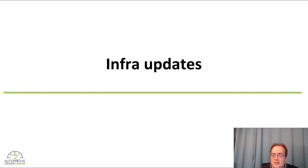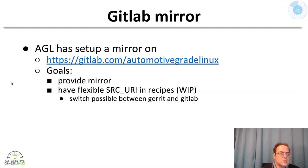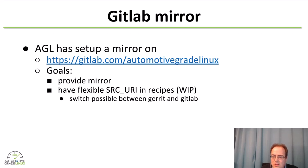On the infra update side, we now have a GitLab mirror available at gitlab.com/automotive-grade-linux. Currently we mirror all our sources there, and the first step is to provide a way to easily switch the source URLs between Gerrit and the mirror to provide additional redundancy and allow further development.